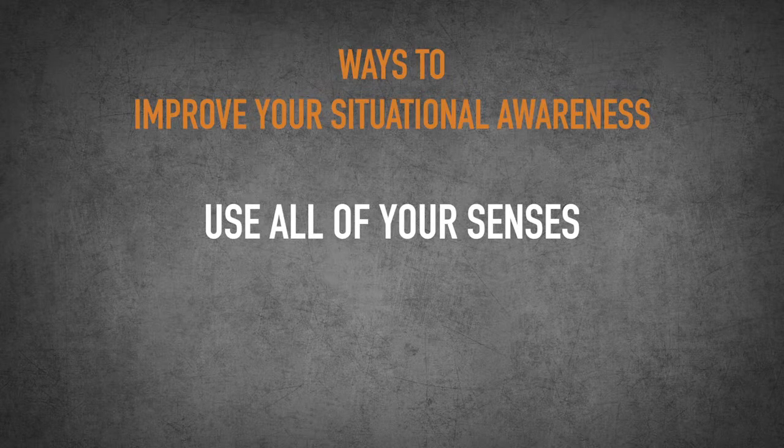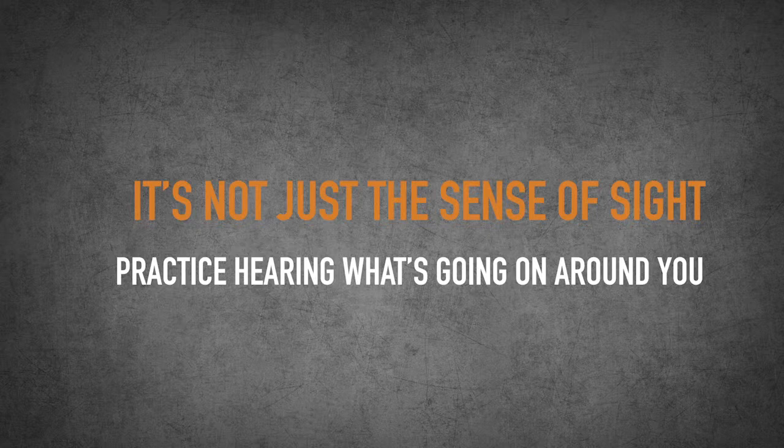Number three is to use all of your senses. Sensing what's going on around you is not just the sense of sight. You also need to practice hearing what's going on. You can do that simply by going outside, going to a public space, sitting, and closing your eyes. Close your eyes and start making visual images — actually picturing what is happening around you just by the sounds that you're hearing. The other senses are your spidey senses. You can work on those through meditation and other techniques to build up that sense of what's going on around you.